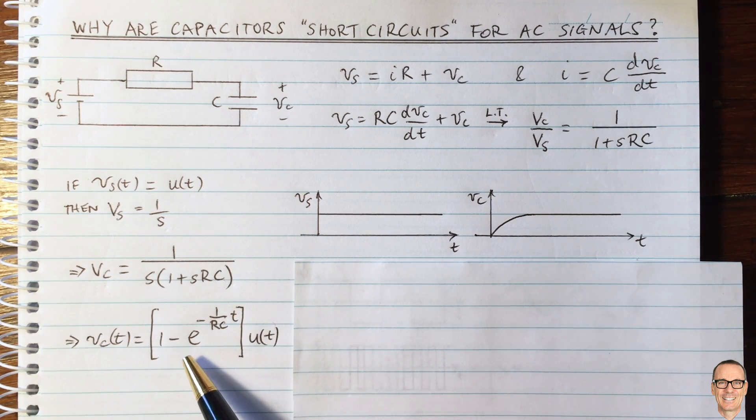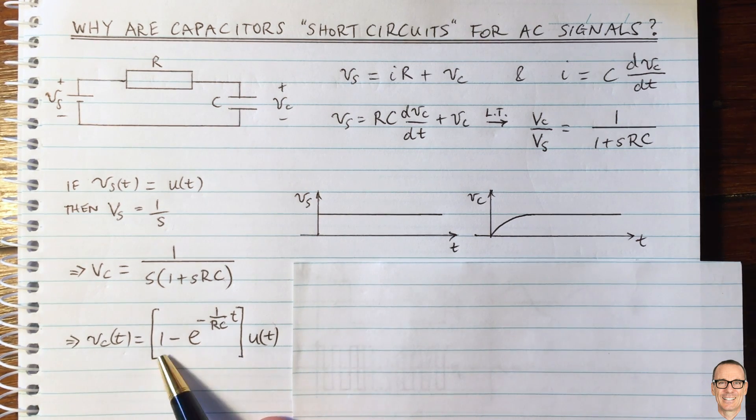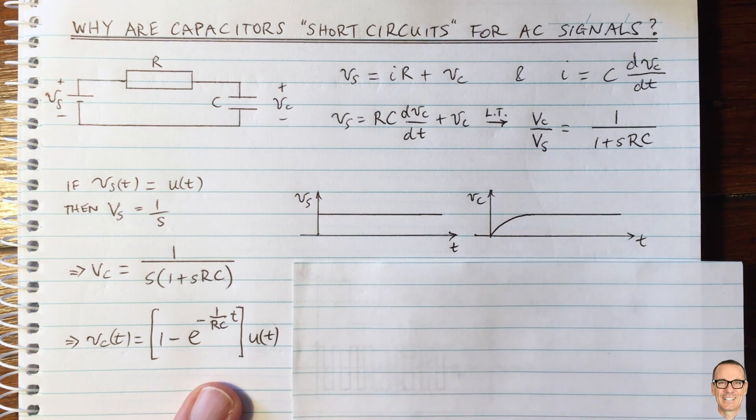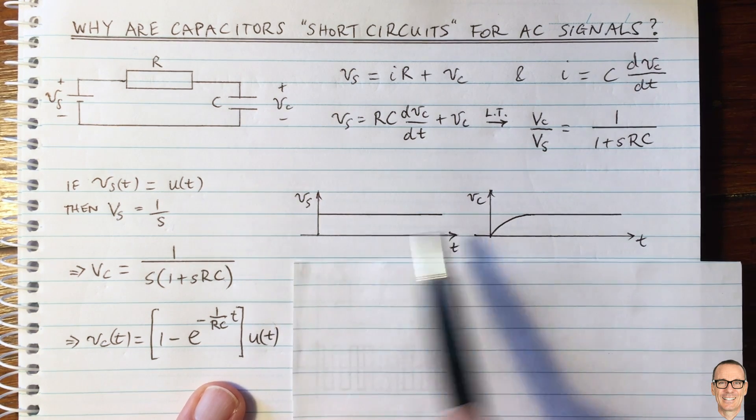If we take the inverse Laplace transform, we find that the voltage as a function of time has this equation here. And that's what I've drawn here. It's a function, it's a step function, so it doesn't exist for negative time.